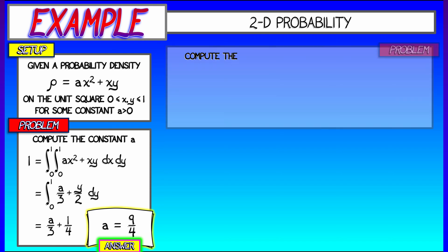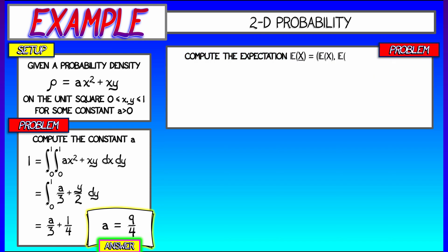Now, let's consider the expectation. This expectation, just like a center of mass, is going to have two coordinates — two components. This is E of X and E of Y, where X is the random variable for the X direction and Y is the random variable along the Y axis. E of X is obtained by integrating X times rho of XY, dX dY — so we're integrating X times the quantity 9 fourths X squared plus XY over the entire unit square.